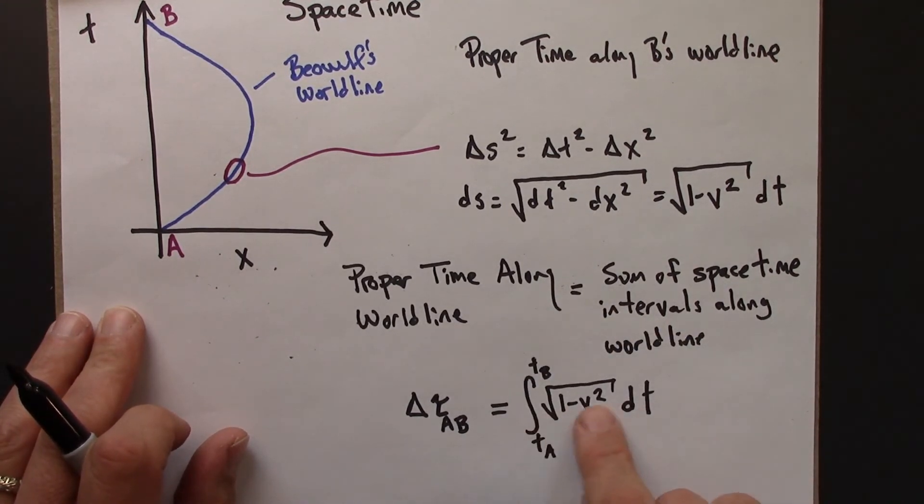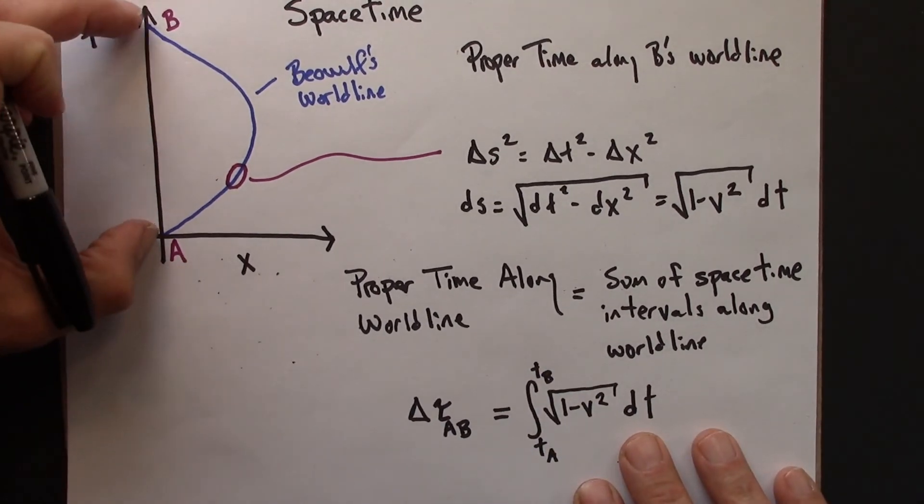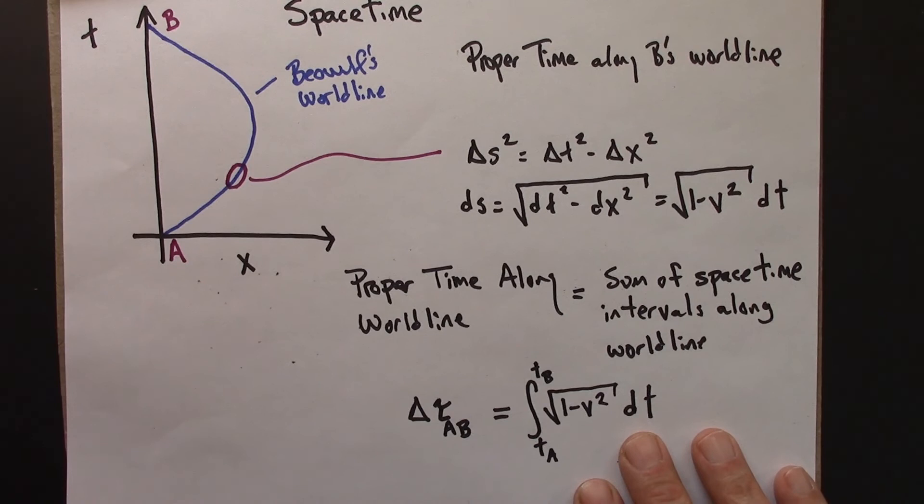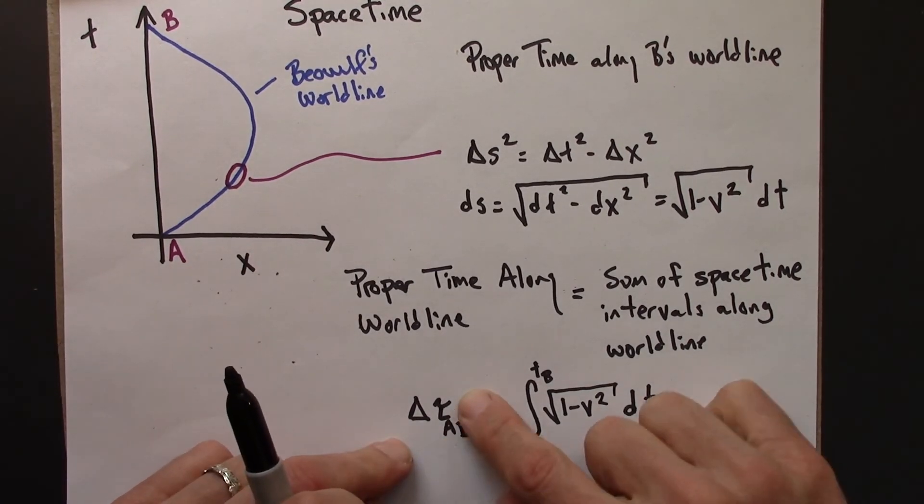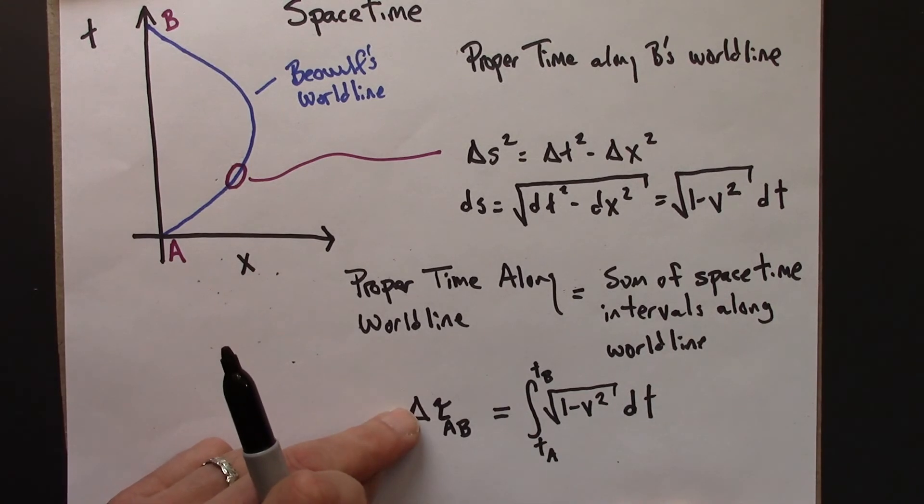ta and tb are the coordinate times here, and the symbol for proper time is delta tau. This is a Greek letter tau, ab to indicate that it's the time from a to b. So this is a big result. I should put it in a box.